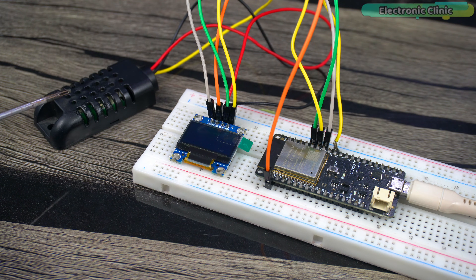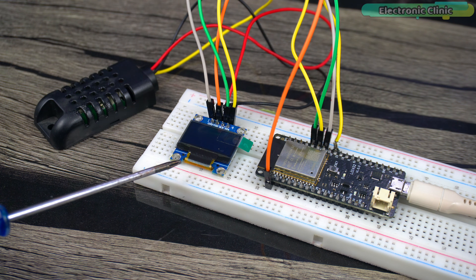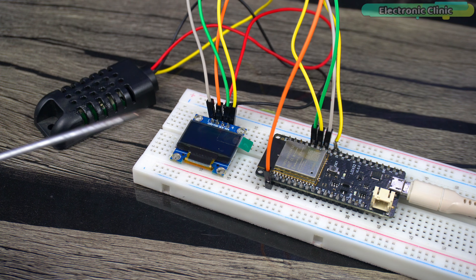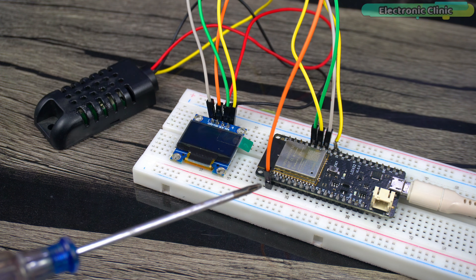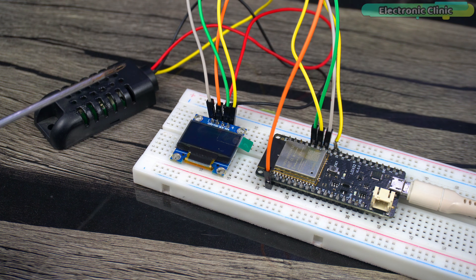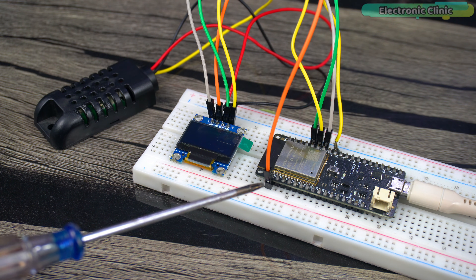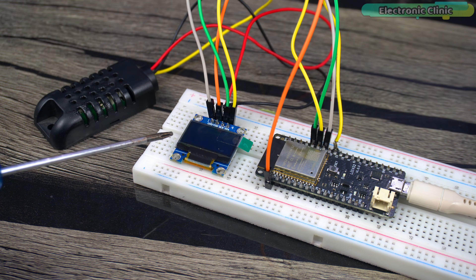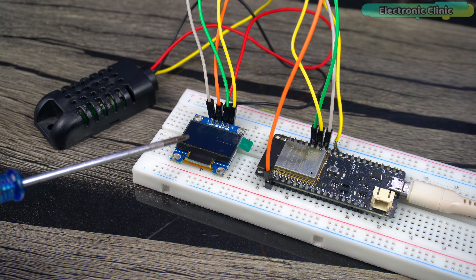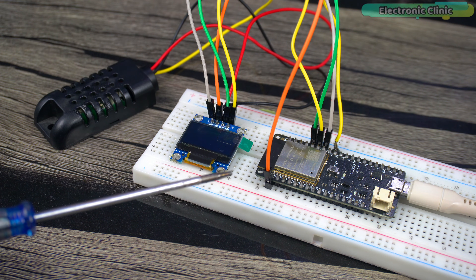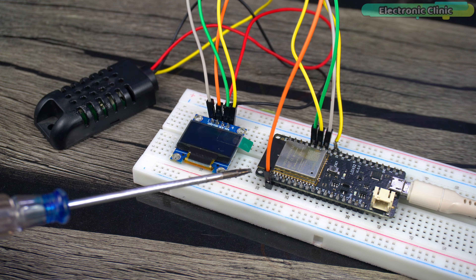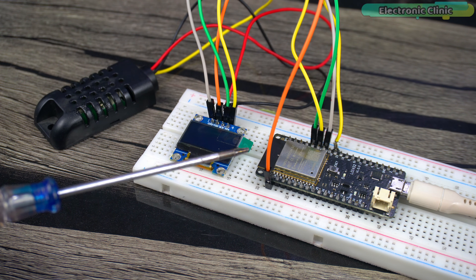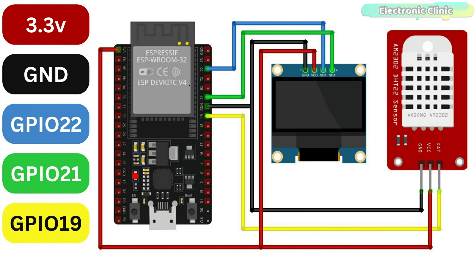Next, we are going to work with the DHT21 temperature and humidity sensor and the SSD1306 OLED display module. Connect the VCC and ground wires of the DHT21 to the ESP32 3.3V and ground pins, and connect the data pin to GPIO 19. Connect the VCC and ground of the SSD1306 OLED to the ESP32 3.3V and ground pins, and connect the SDA and SCL pins to ESP32 GPIO 21 and 22 respectively. You can follow the circuit diagram for connections.